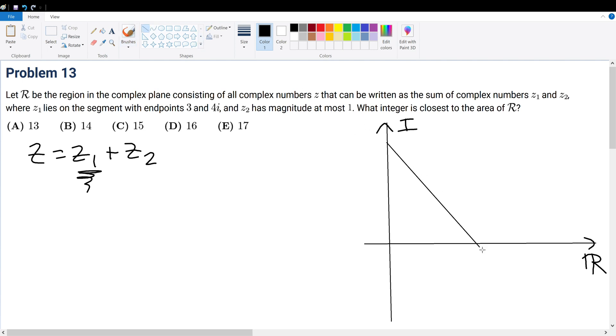Now with this information, we're also told that z₂ has a magnitude of at most 1. Now z₂ can be imagined the same way. First of all, how do you actually visually represent this? Well, any point on this line right here can be a potential value of z₁.